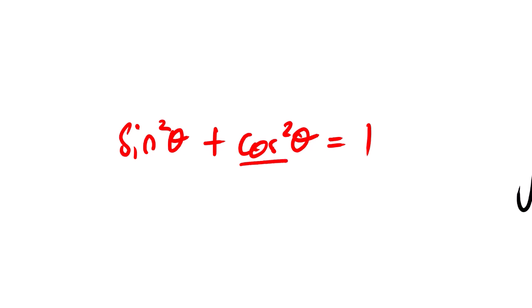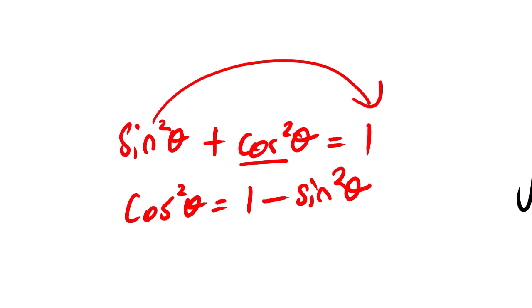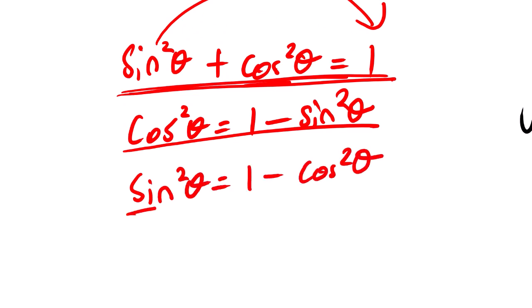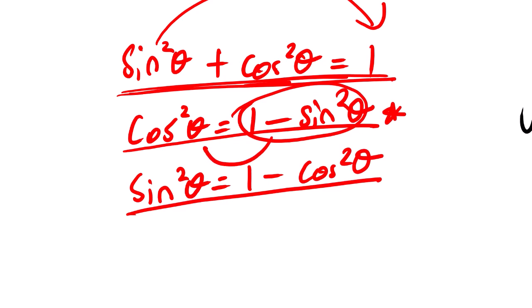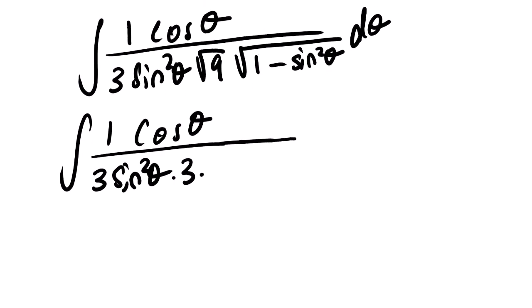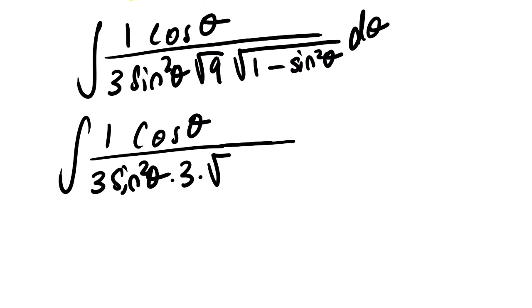The identity states that sine squared theta plus cos squared theta equals 1. Making cos squared theta the subject, we have cos squared theta equals 1 minus sine squared theta. So we can substitute 1 minus sine squared theta with cos squared theta.